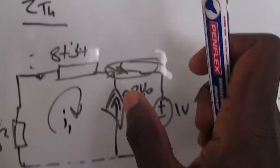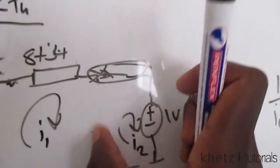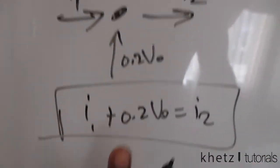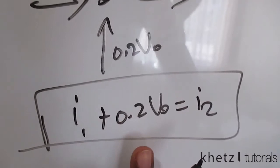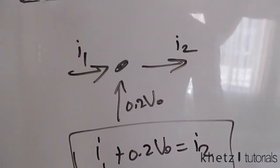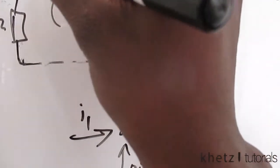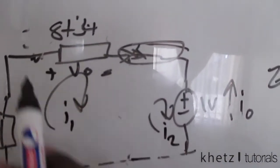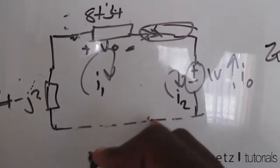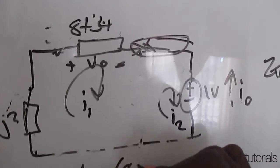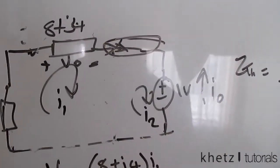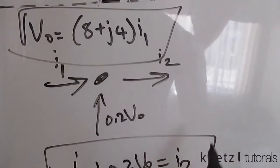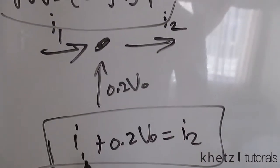In super mesh analysis we take out the current source branch and treat both meshes as one single loop. VO is indicated across both impedances combined, so VO = (8 + j4) × i1. This gives us a second relationship. So far we have two equations and three variables: i1, VO, and i2 — we need one more equation from the super mesh.